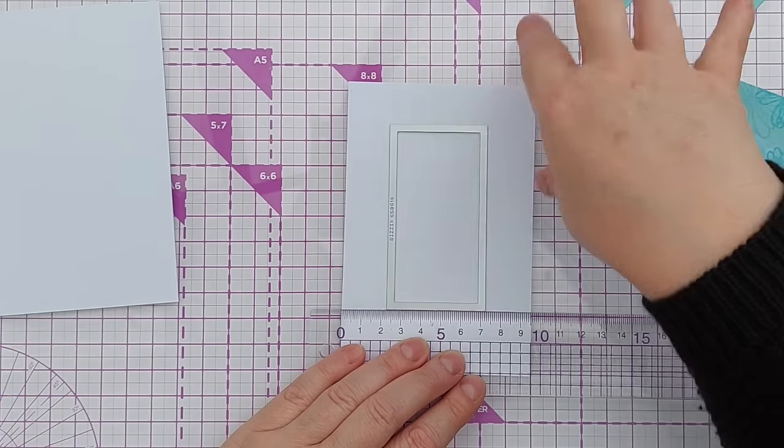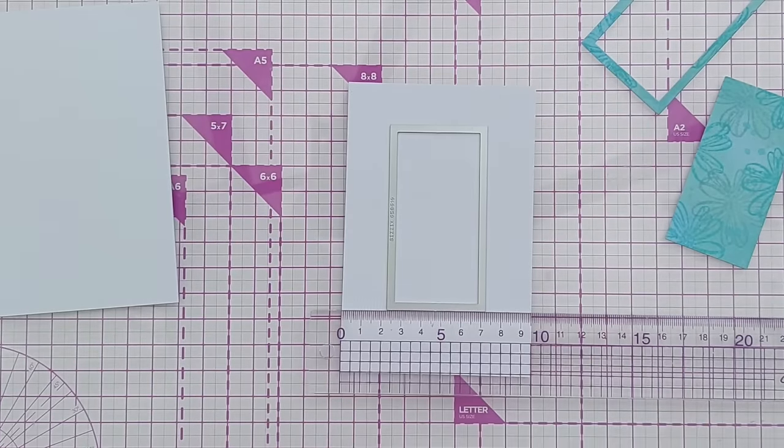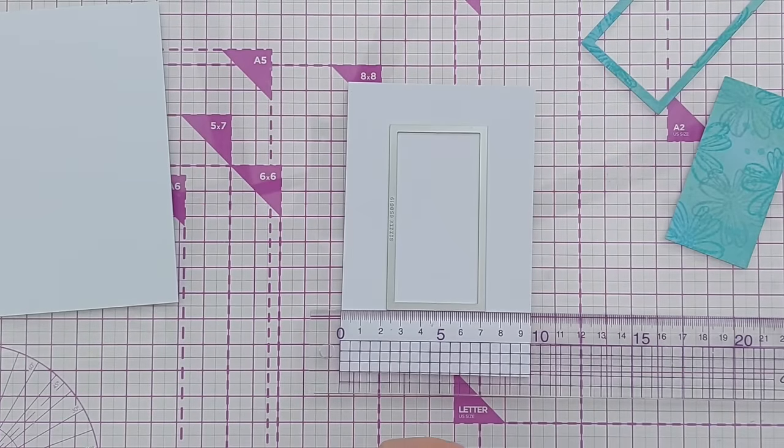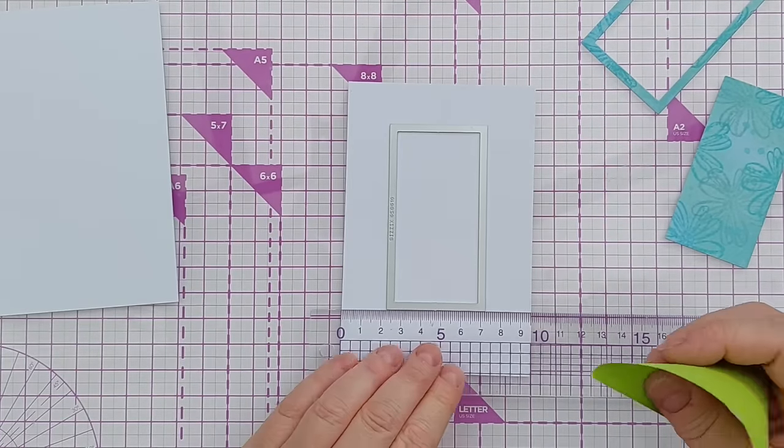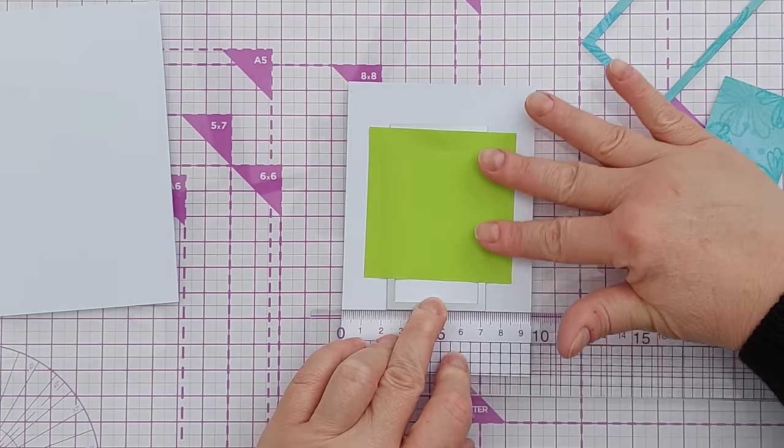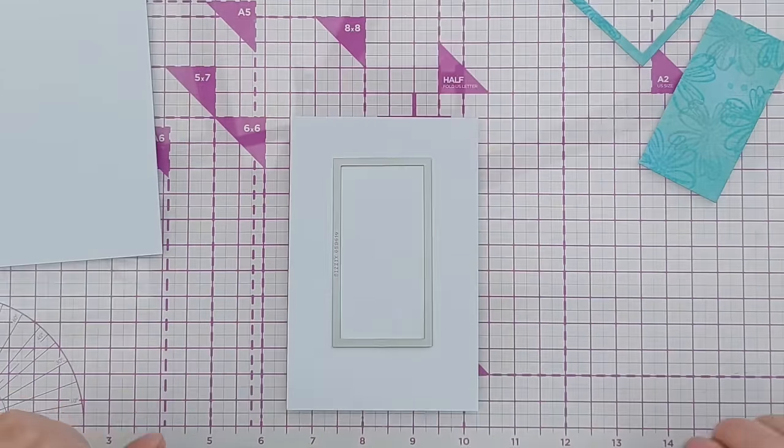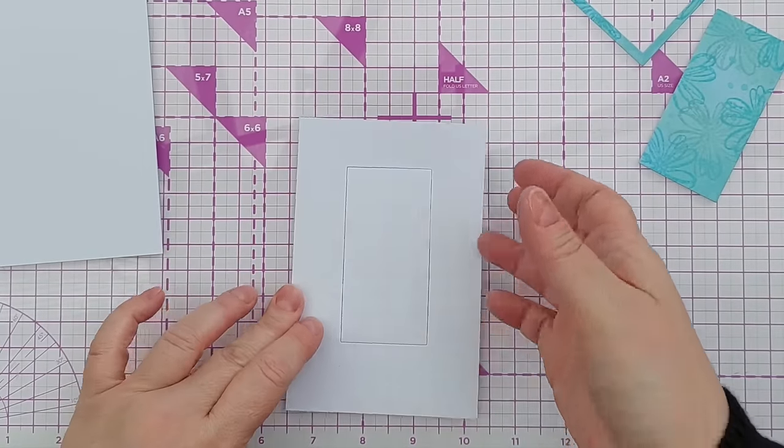I'm going to get my sticky note again and stick that right in the middle to hold it in place and run that through my die cutting machine. So now I have an aperture.